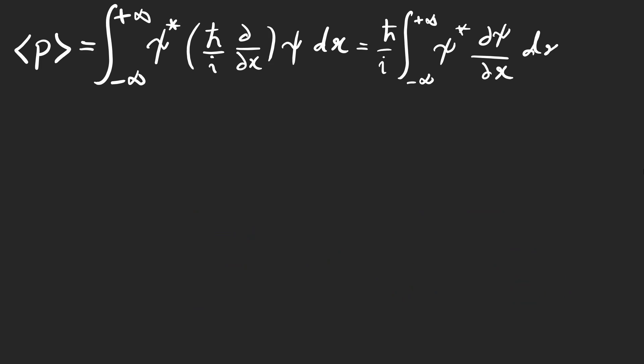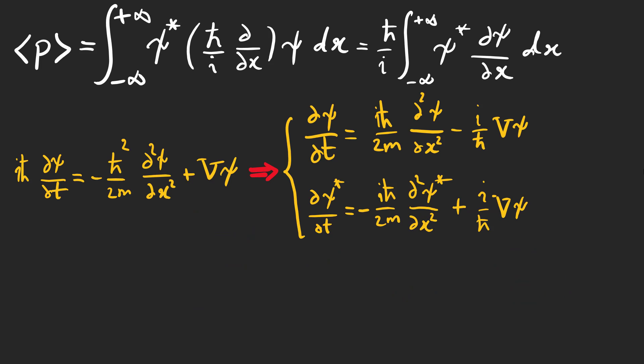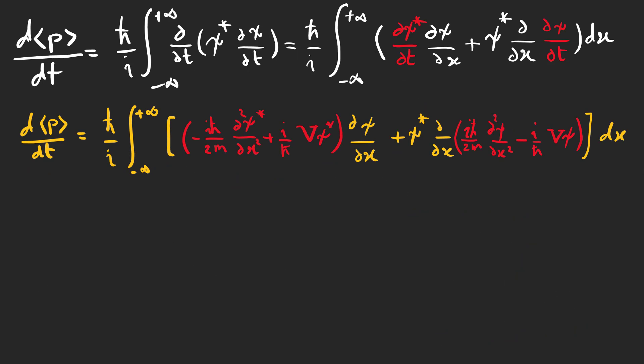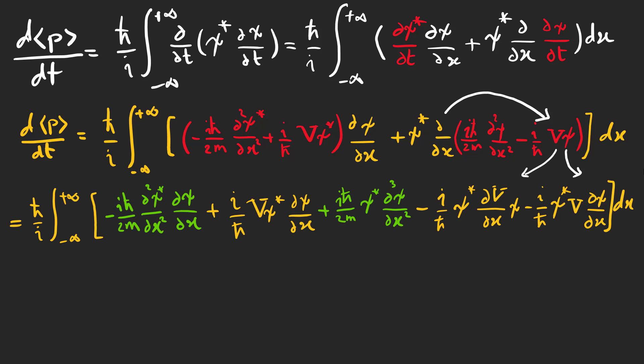What we need to calculate this integral is the expectation value of p and the Schrödinger equation, and of course its conjugate. Because if we take the derivative of the expectation value of p, the partial derivatives of psi with respect to t appear. Pay attention that for this term we can use the partial derivatives in the order we desire, and we can use them interchangeably. Now let's substitute the Schrödinger equation into the integral. It gives these five integrals.